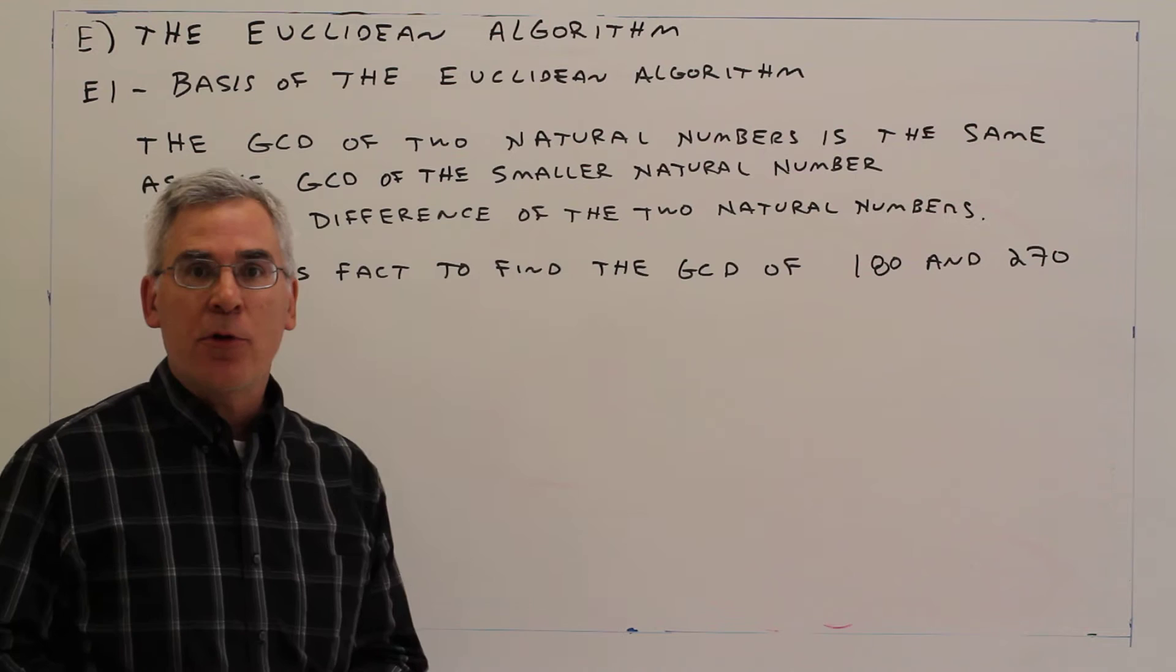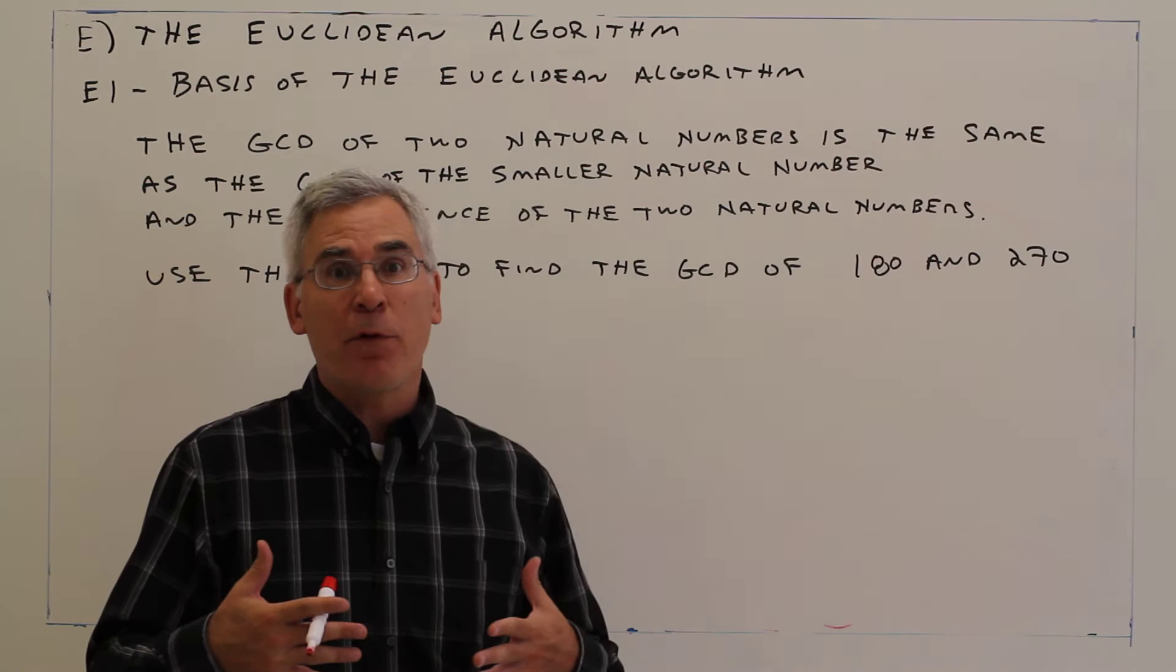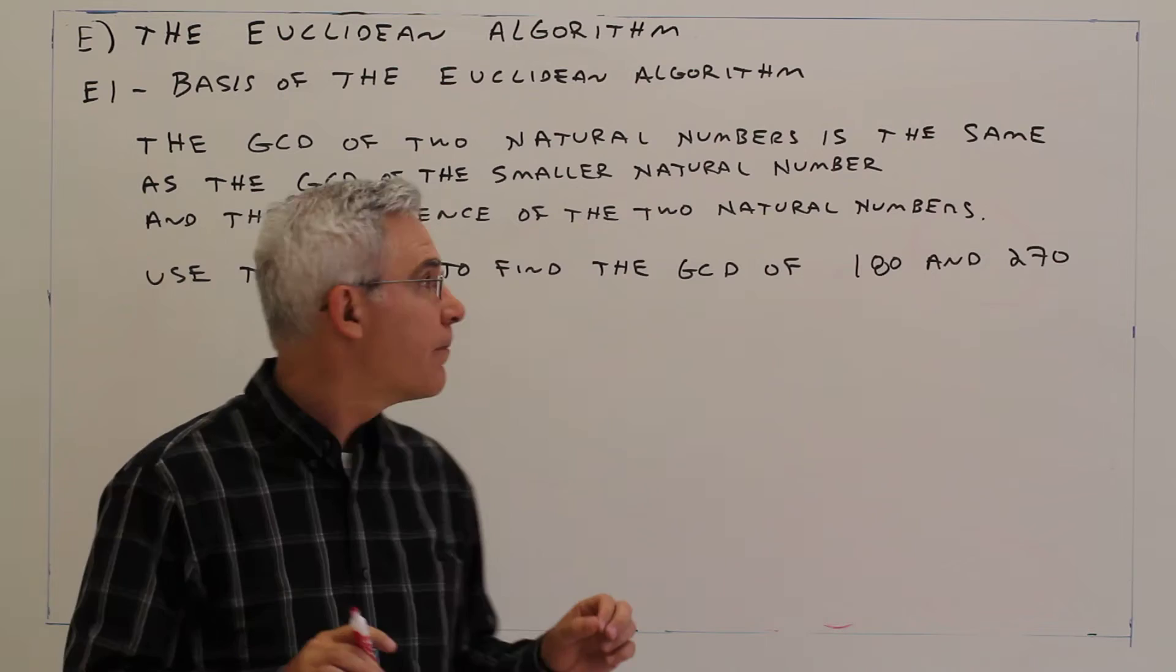We're on our next topic, topic E, the Euclidean Algorithm. The Euclidean Algorithm is a shortcut to find the greatest common divisor and it's very useful for very large numbers where it would be time consuming to do the prime factorization.